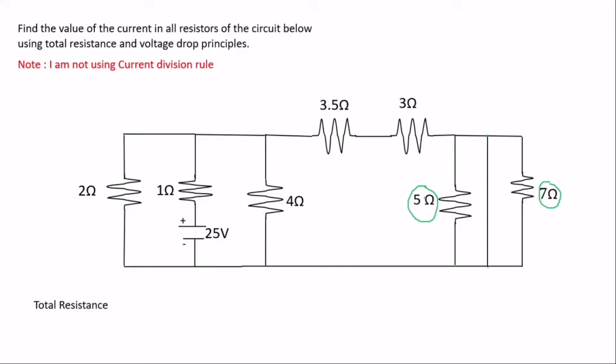It means that this resistor and this resistor will be short-circuited from the diagram. When you redraw the diagram, you are going to exclude these resistors — they will be eliminated. So now let's get to business.